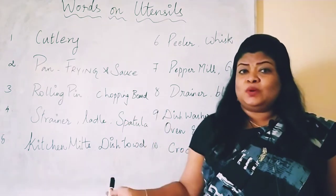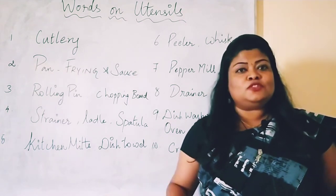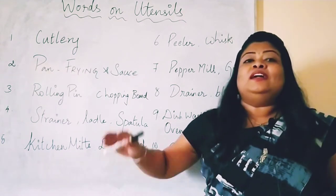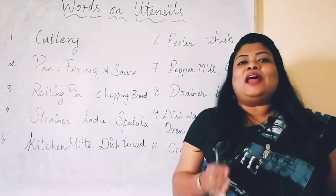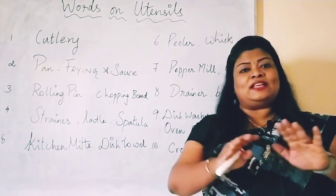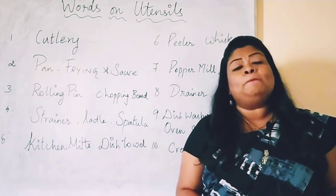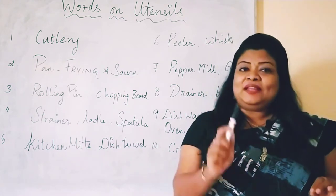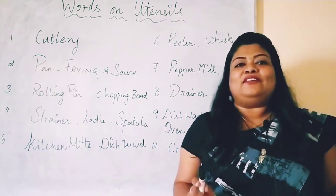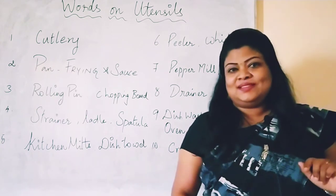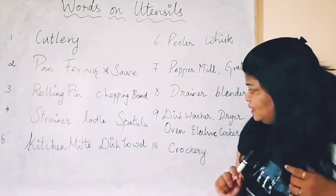A slight change makes your language look really fluent and confident. These words are not just words — whenever you are giving recipes or explaining something to somebody, try to use the exact word rather than using one single word to explain four processes. That's why I am teaching this food vocabulary. And here we have drainer and blancher, which we already saw, and dishwasher.